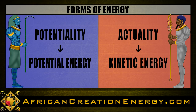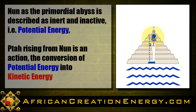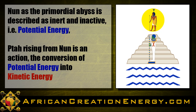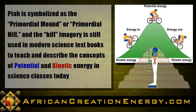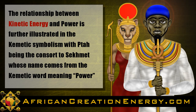Nun, as the primordial abyss, is described as inert and inactive — i.e., potential energy. And Ptah rising from Nun is an action, is a motion, is movement — the conversion of potential energy into kinetic energy. In fact, Ptah is symbolized as the primordial mound or primordial hill, and the hill imagery is still used in modern science textbooks to teach and describe the concepts of potential energy and kinetic energy in science classes today. The relationship between kinetic energy and power is further illustrated in the Kemetic symbolism with Ptah being the consort to Sekhmet, whose name comes from the Kemetic word meaning power.